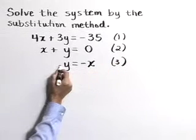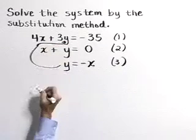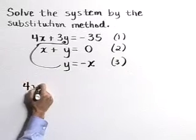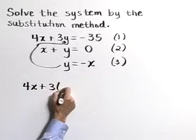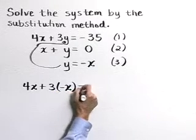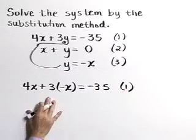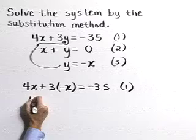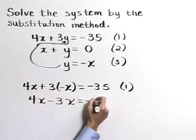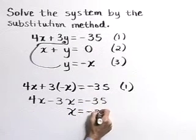Now we're going to substitute y equal negative x into equation one. So equation one becomes 4x plus three times, in place of y we'll substitute negative x, is equal to negative 35. That's equation one. Now let's solve it for x. 4x multiplying we get minus 3x is equal to negative 35. So x is equal to negative 35.